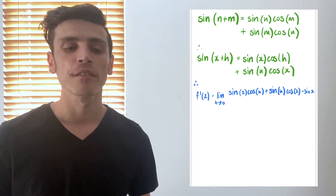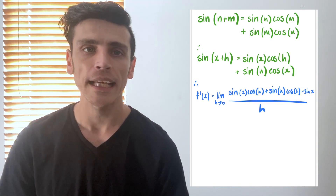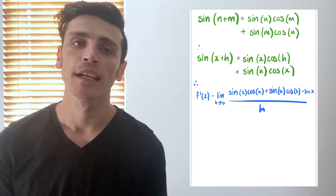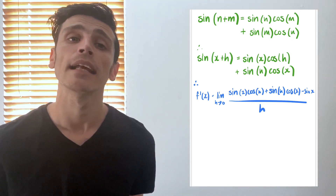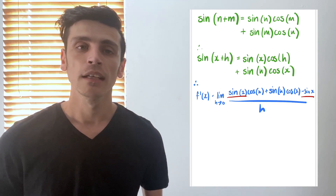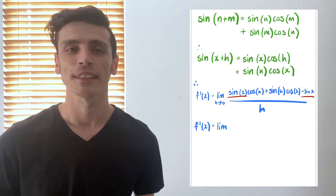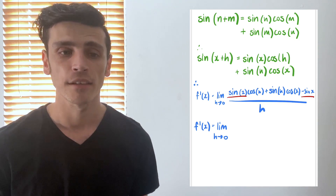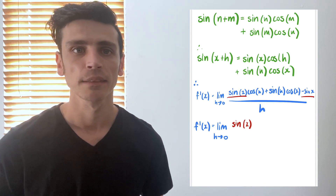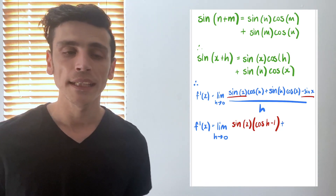The first thing we're going to do is see if we can find some like terms. I can notice in my fraction that I've actually got sine of x in two parts: I've got sine(x) multiplying cos(h), and I've also got negative sine(x) at the end — which really means sine(x) multiplied by negative one. So I can put these together to make our fraction look a little bit nicer and simpler to solve.